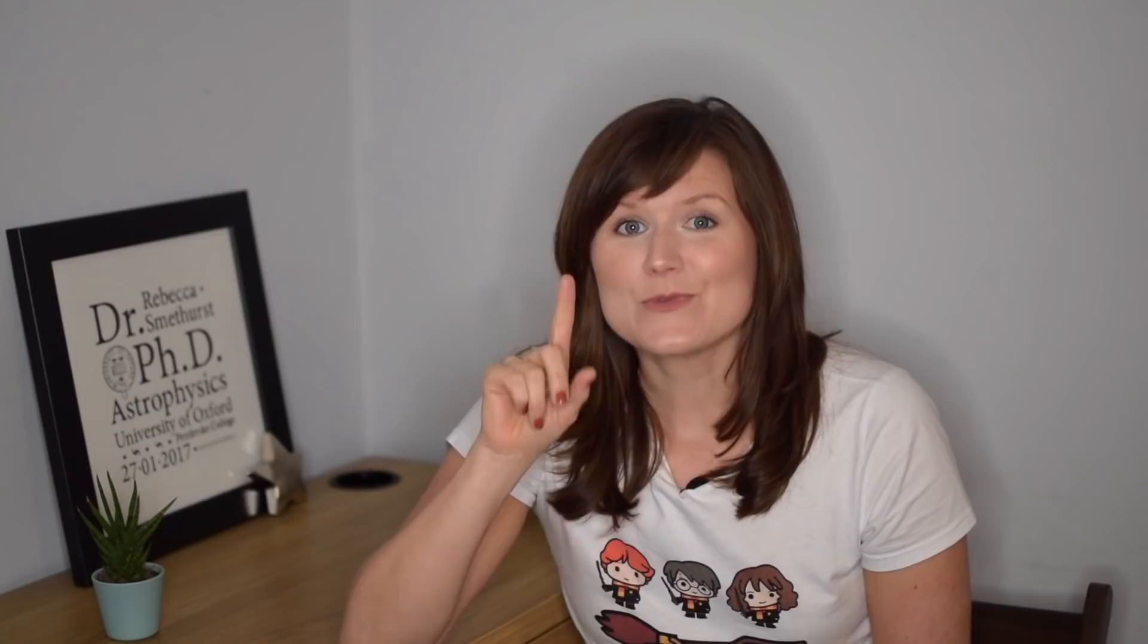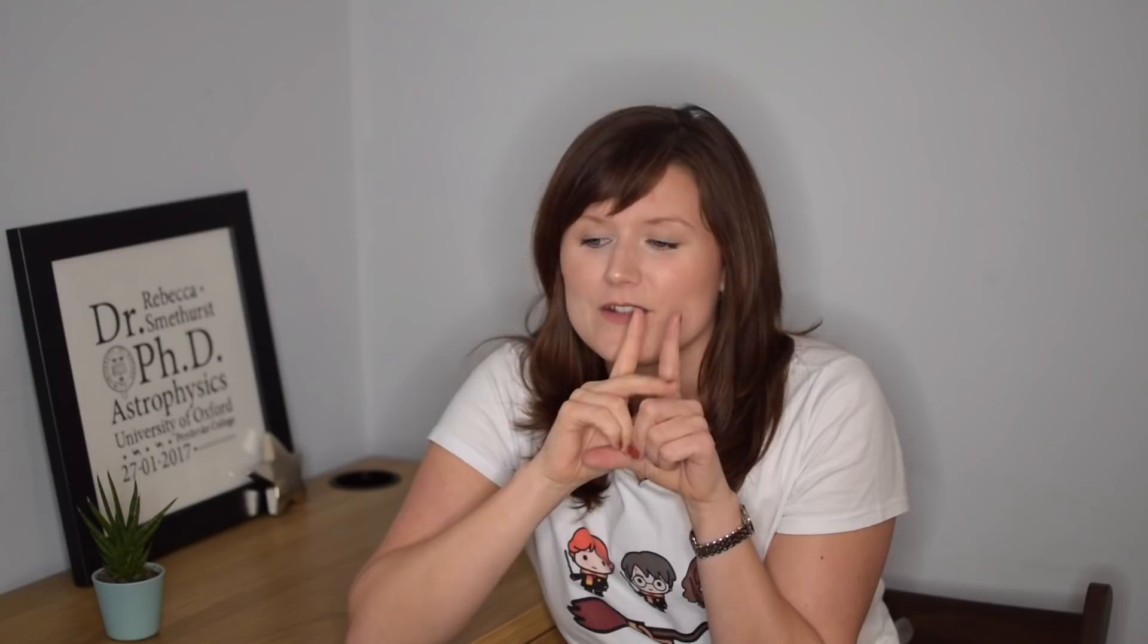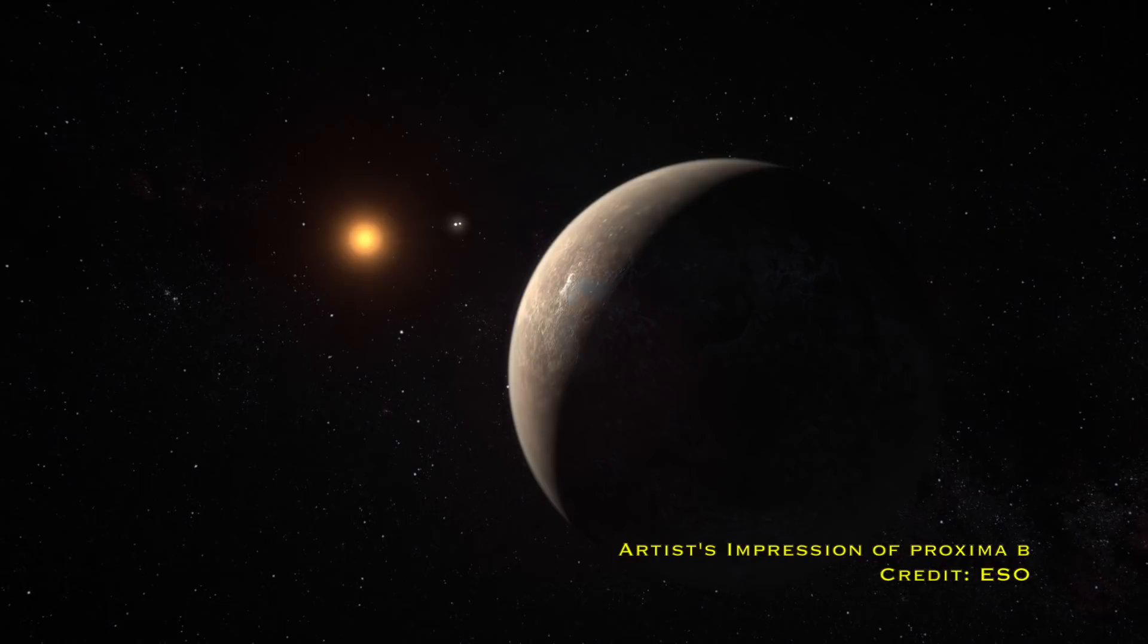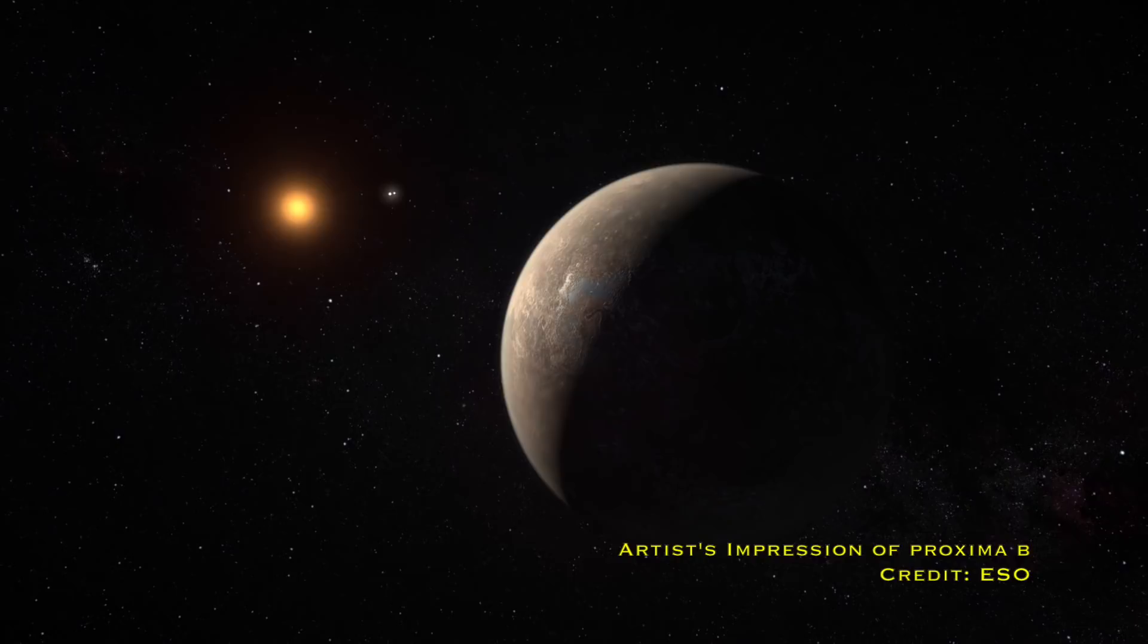Then in 2016, Anglada-Escudé and collaborators discovered the closest exoplanet to Earth in Proxima b. This was a planet orbiting Proxima Centauri, one of the closest stars to Earth in the Alpha Centauri triple star system. Not only that, this planet is about 30% bigger than the Earth, but it orbits a lot closer to its star, so much that its orbit only takes it 11 Earth days. So you would think that it would be scorching hot. However, its star is only a red dwarf star, a very small, much cooler than the Sun star. And so this planet is actually in the habitable zone as well. So not only do we have the closest exoplanet to Earth, but the closest exoplanet in the habitable zone as well.